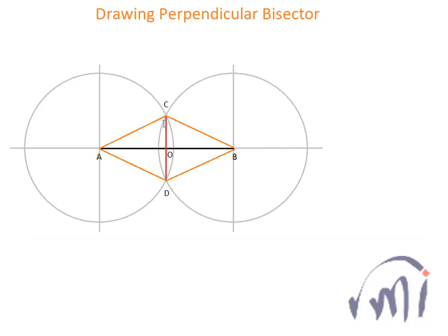And then there is one more property of this perpendicular bisector. Perpendicular bisector means it divides line AB into two equal parts and at the same time it is perpendicular to the line AB.